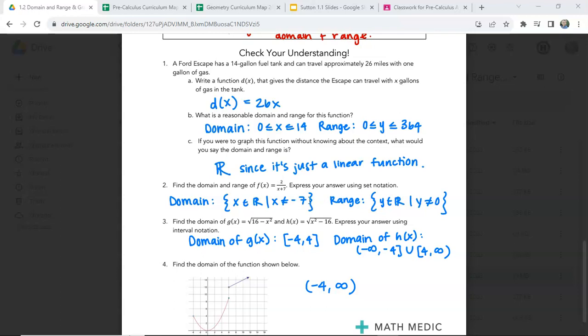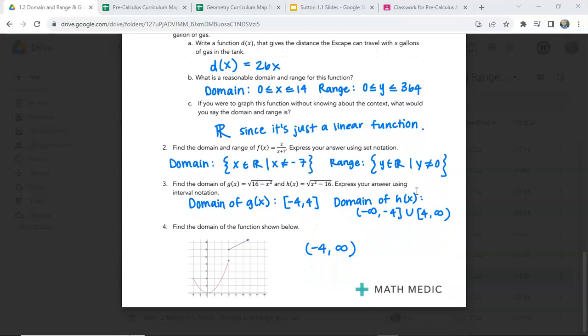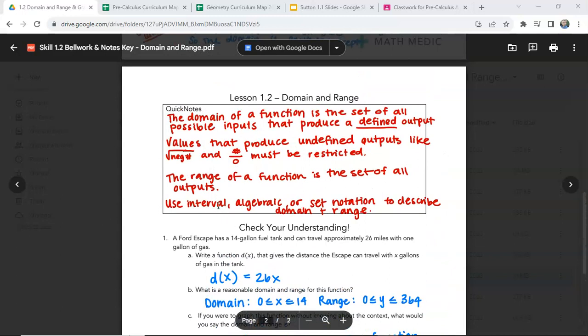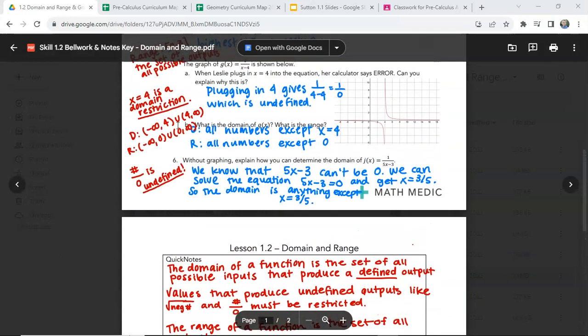So that is the notation they're using there. So basically saying the domain is not negative seven and the range is not zero. Everything else is good except for negative seven for the domain and zero for the range. So if you used just kind of normal notation like this with a less than or equal to, or the set notation we talked about, that is good. And then find the domain of, sorry. One thing I want to clarify, I did make a mistake here.